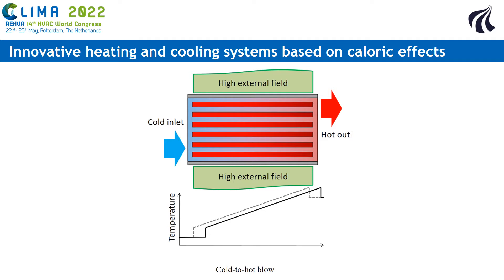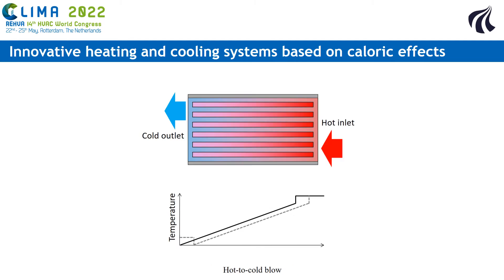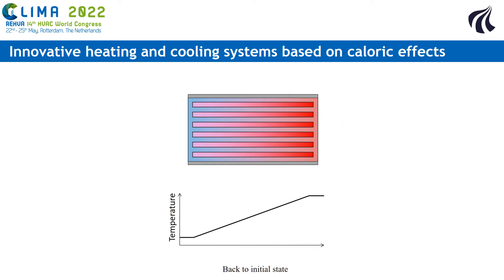Then the heat transfer fluid is pushed from the cold source to the warmer heat sink. The heat transfer fluid circulates in the heat sink and therefore transfers some heat to the heat sink. The external field is then removed from the caloric material and the temperature drops in the entire regenerator. The heat transfer fluid is then pushed back from the warm side to the cold side and circulates in the cold heat source, therefore absorbing some heat from the heat source. And we're back to the initial state — that's how you transfer heat from a cold heat source to a warmer heat sink with a caloric heat pump cycle.